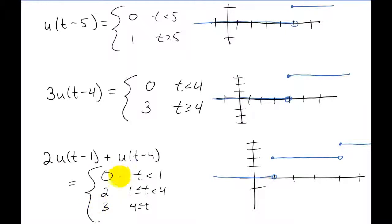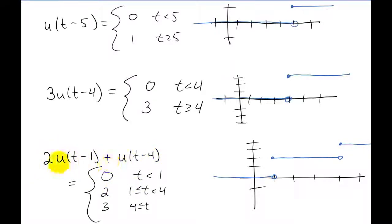If we write out the piecewise function, we have a function that starts at zero, jumps up to two when t equals one, and then jumps again up to three when t equals four. You'll start to see a pattern: every step function represents a jump or change in the function at the t value given in its argument. How big the jump is in each case is given by the coefficient in front of the step function — in this case, a jump of two at t equals one and a jump of one at t equals four.